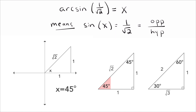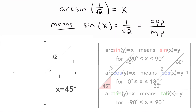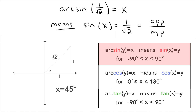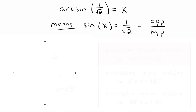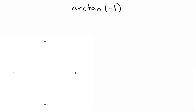So x equals 45 degrees, or π/4 in radians. We check that 45 degrees is indeed between negative 90 and positive 90 degrees — it is. So our answer is x = 45° or π/4.